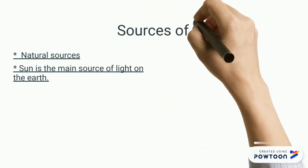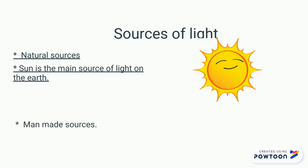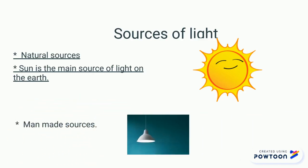There are two different things: natural source and man-made source. The natural source is the sun. The sun is the main source of light on the earth. It provides us heat and it makes the plants grow. And the man-made sources include the lamp, the torch, and all of this.